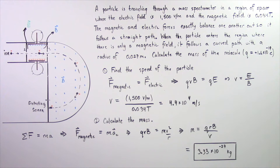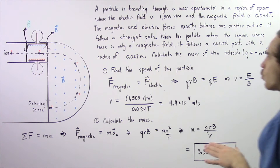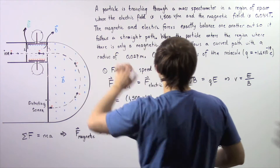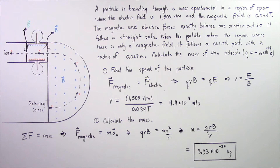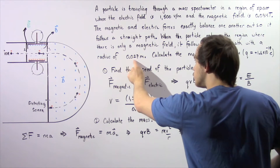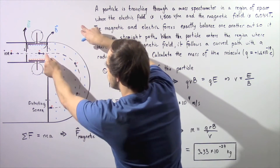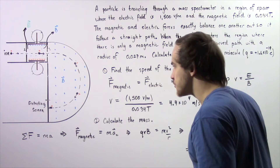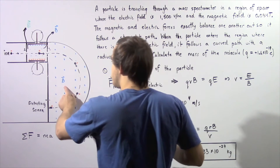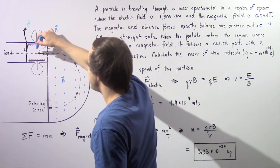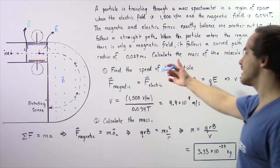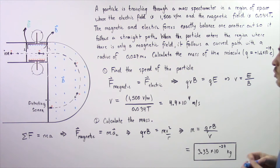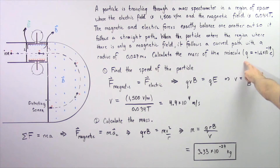When the particle enters the region of space where there is only a magnetic field, it follows a curved pathway with a radius of 0.027 meters. The magnitude of the magnetic field B in this region is the same as in the previous region. We want to calculate the mass of our particle, knowing that the charge is equal to positive 1.6 times 10 to the negative 19 Coulombs.